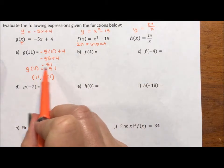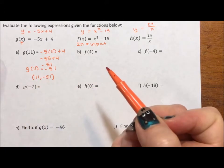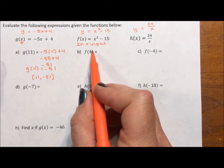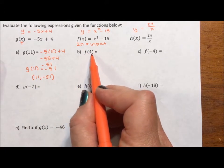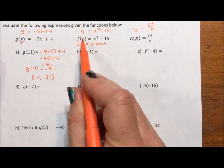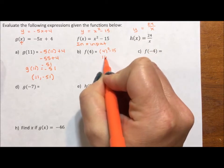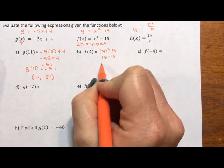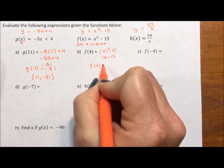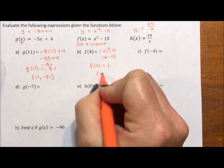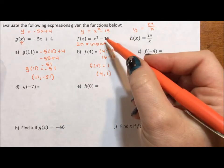f(4) means I want to substitute 4 in for x for my second equation. So 4² - 15 is 16 - 15, which equals 1. So f(4) equals 1. In other words, (4, 1) is a point on this graph.